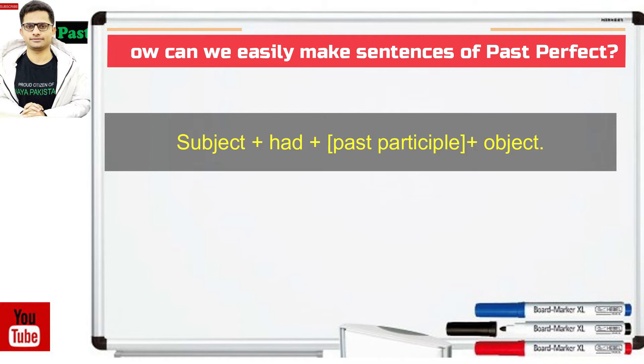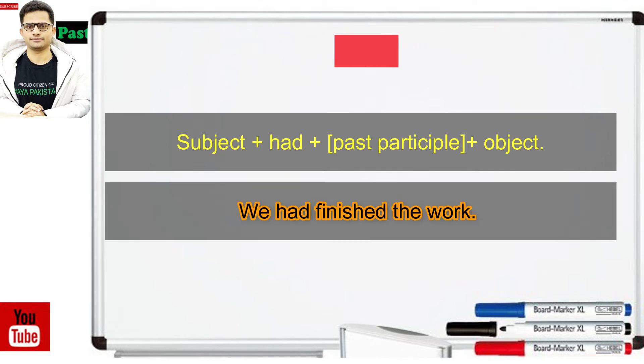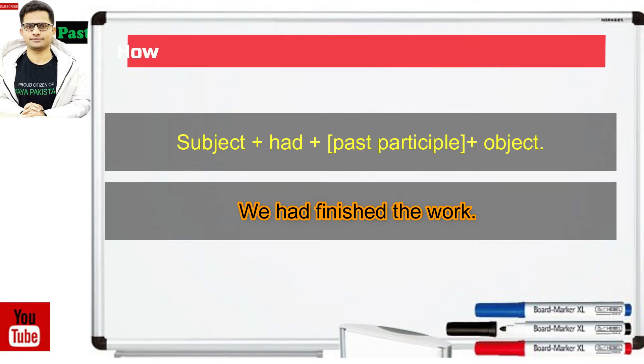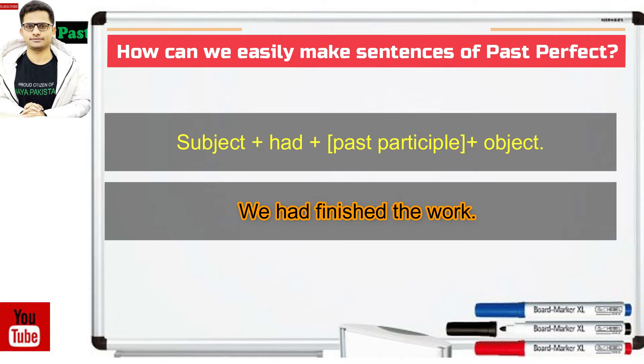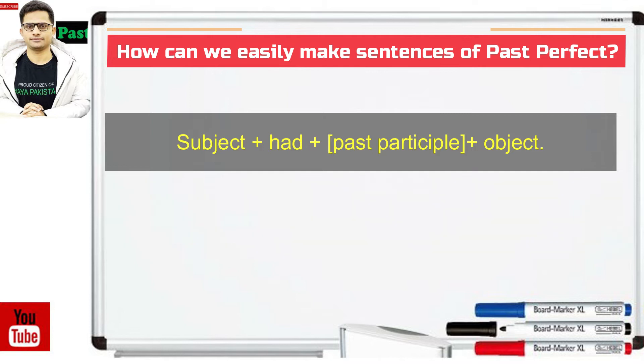We have an example sentence followed by the formula. We had finished the work. We is the subject and then had is past tense. Finished is the past participle. Past participle means third form of the verb. And then the work is the object. We had finished the work. ہم نے کام ختم کر دیا تھا۔